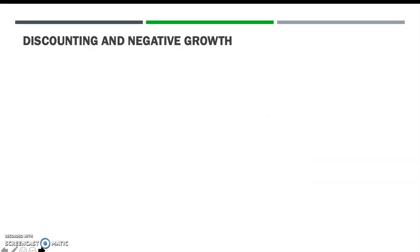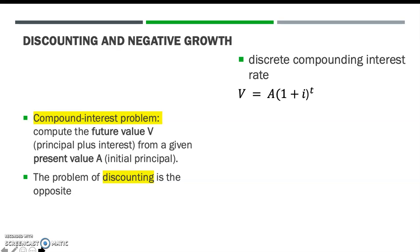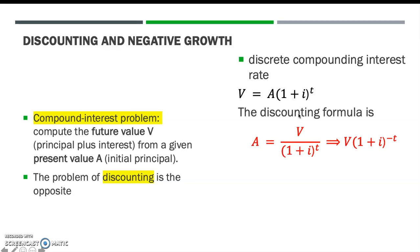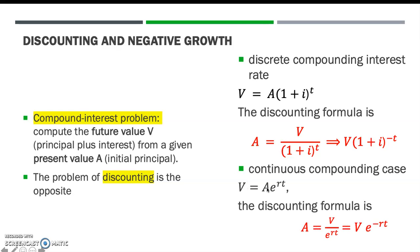In a compound interest problem, we seek to compute the future value V from a given present value A. The problem of discounting is the opposite: finding the present value A of a given sum V which is to be available T years from now. From the discrete compounding formula, the discounting formula for present value is A equals V times (1 plus i) to the power of minus T. Similarly, for the continuous case, the discounting formula is A equals V over e to the RT, or equivalently V times e to the power of minus RT.